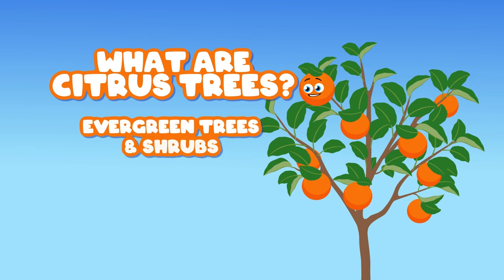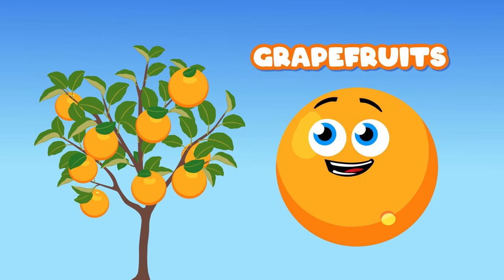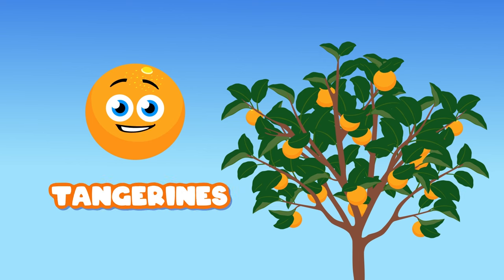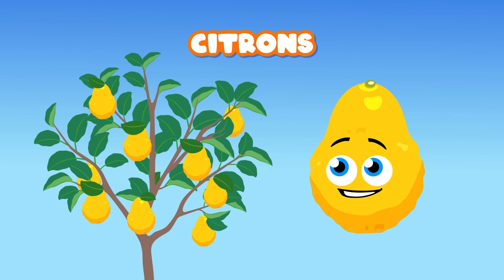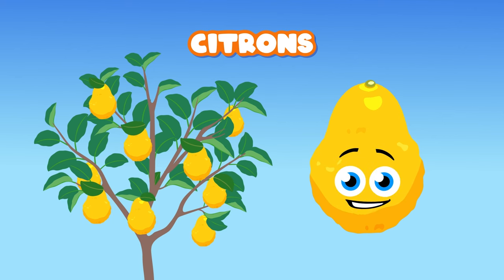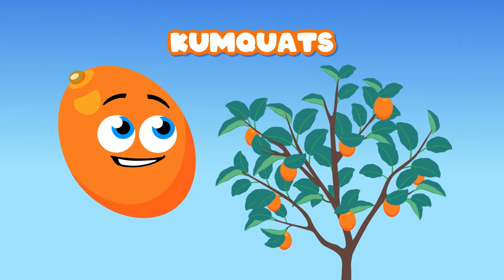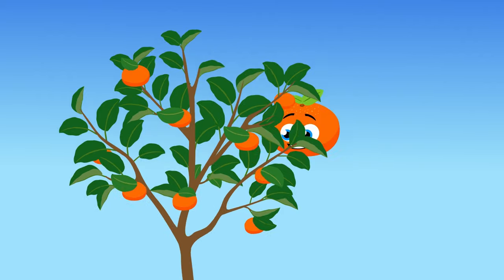There are also grapefruit trees which are citrus trees you see. And now you're looking at a tree growing tangerines. The citrus tree grows sour citrons — they do look like lemons, you've learned in this song. Kumquat trees grow the yummy kumquats. It looks like a tiny oval orange we all love a lot. Mandarin trees, you guessed it, grow mandarins.